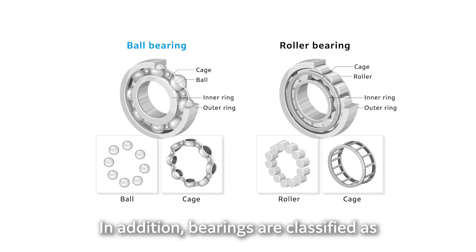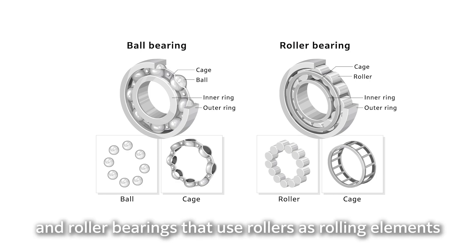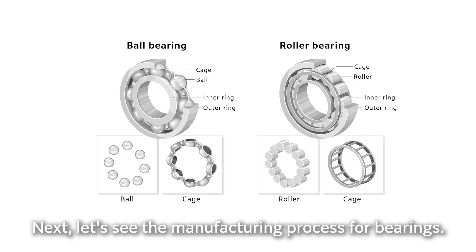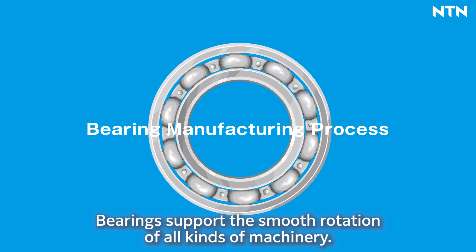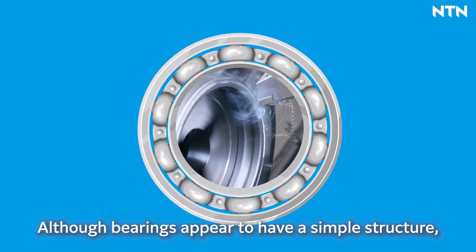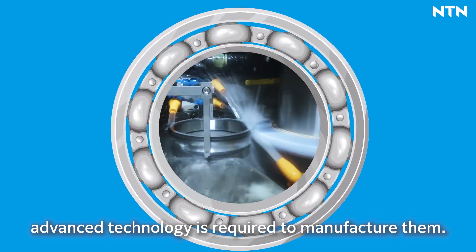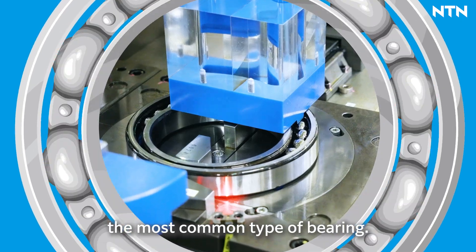In addition, bearings are classified as ball bearings that use balls as rolling elements, and roller bearings that use rollers as rolling elements, based on their application. Next, let's see the manufacturing process for bearings.